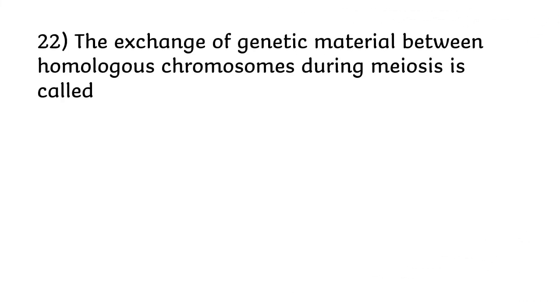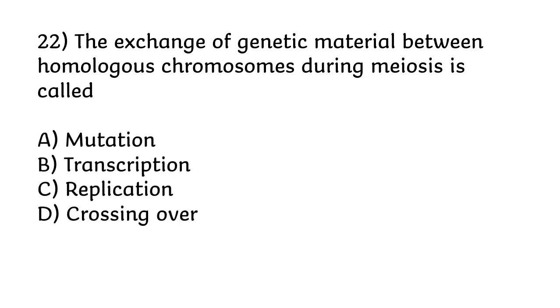The exchange of genetic material between homologous chromosomes during meiosis is called: mutation, transcription, replication, or crossing over. The correct answer is option D, crossing over.